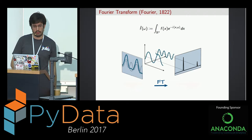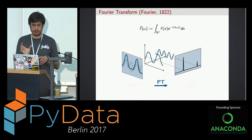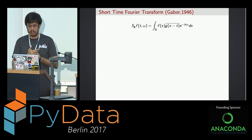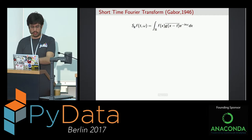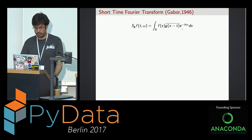The easiest way to tackle this problem is, instead of integrating over all time or space, you take small window functions, take the Fourier transform within each window, and then move the window along the time or space. This gives you local information about the frequencies as well. This is called the short-time Fourier transform, and it was presented by Dennis Gabor — who was at what is now the Technical University of Berlin — in 1946.